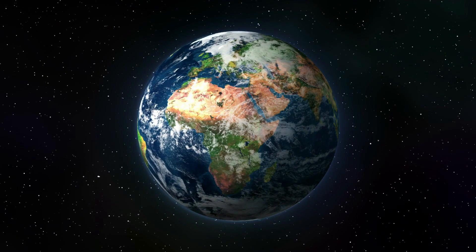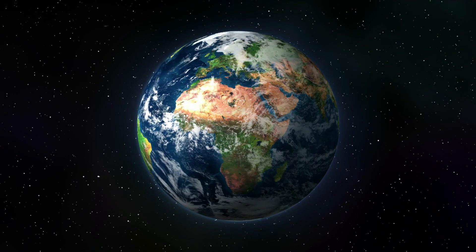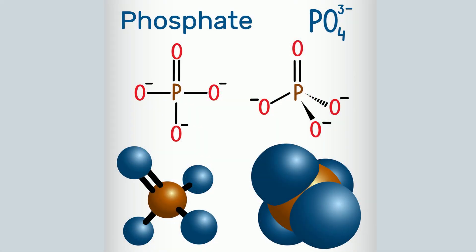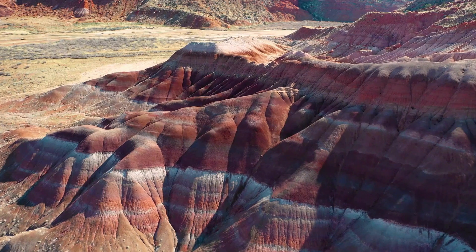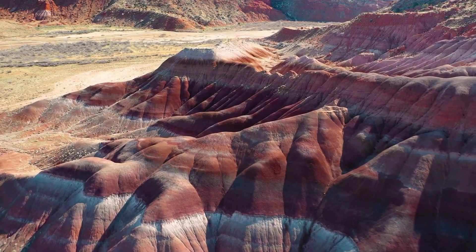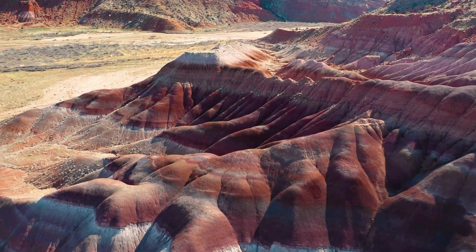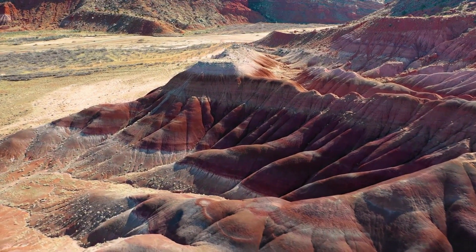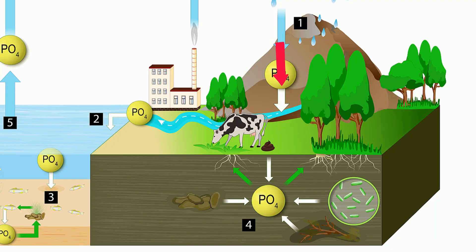In the natural world, phosphorus is never encountered in its pure form, but only as phosphates, which consist of a phosphorus atom bonded to four oxygen atoms. Phosphate compounds are found in sedimentary rocks, and as the rocks weather and wear down over long time periods, the phosphorus they contain slowly leaches into the surface water and soils. Volcanic ash and fertilizer can also be significant phosphate sources.